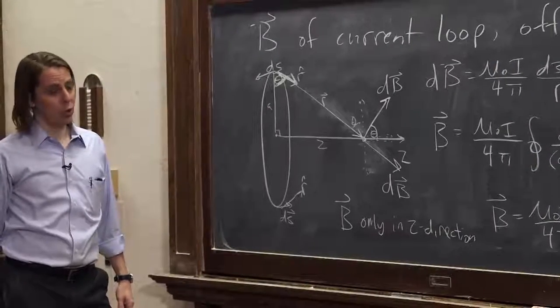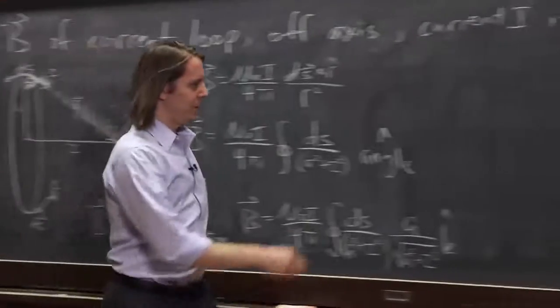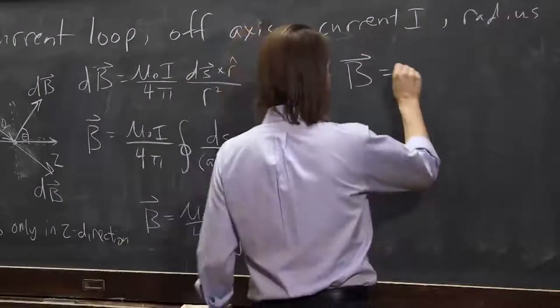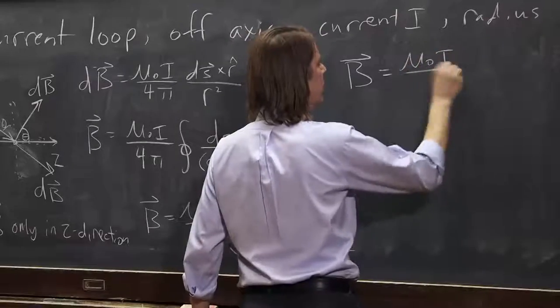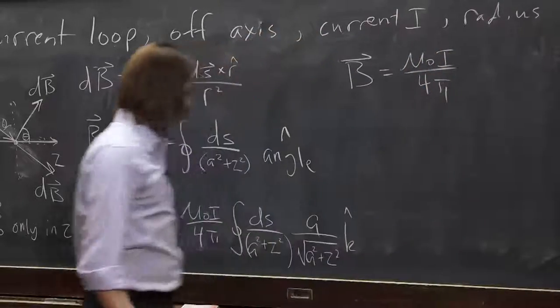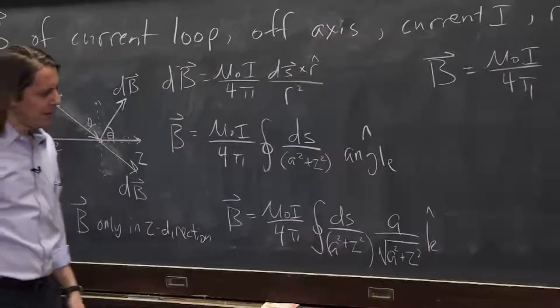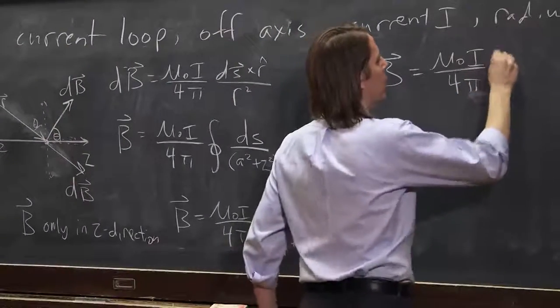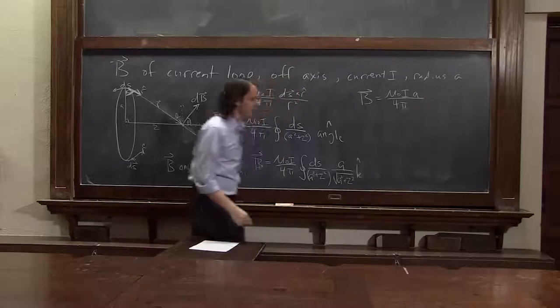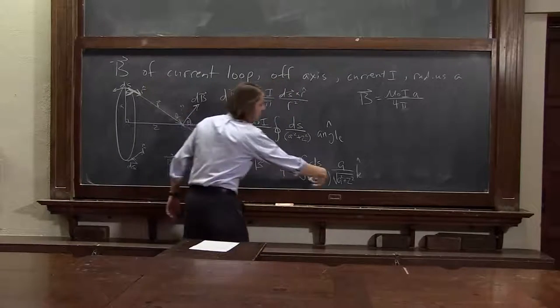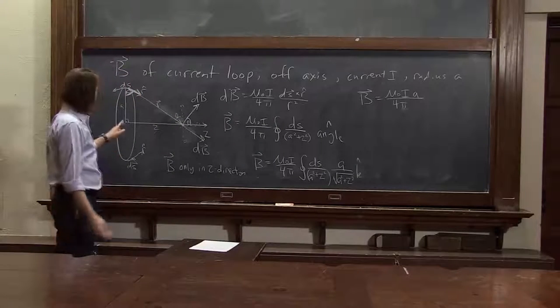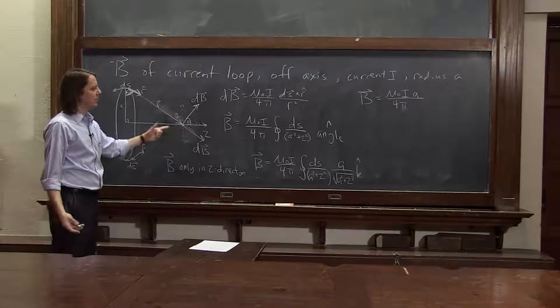Ah. Okay. Looks like we're setting up a nasty integral. Or not. Because let's look at this. B. Let's pull out all the constants. Mu naught I over 4 pi. We have an a here. Well, that's a constant. A is a constant. We can pull that out. And down here, usually this is this nasty integral thing we've created. But not this time. It's a constant.